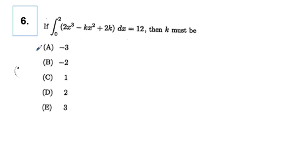This is an AB calculus definite integral problem. Here we have if the integral from 0 to 2 of 2x squared minus kx squared plus 2x dx equals 12, then k must be.